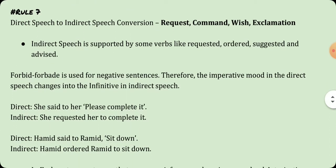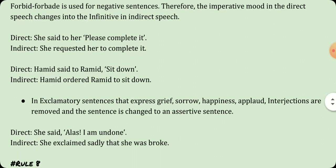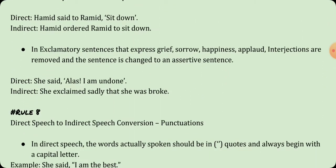The seventh rule is about request, command, wish, or exclamation. Indirect speech is supported by verbs like requested, ordered, suggested, and advised. Note that 'forbid' is used for negative sentences. The imperative mood in direct speech changes into the infinitive in indirect speech. For example, 'She said to her, please complete it' becomes 'she requested her to complete it,' introducing the infinitive 'to.' Also, 'Hamid said to Ramid, sit down' becomes 'Hamid ordered Ramid to sit down.'